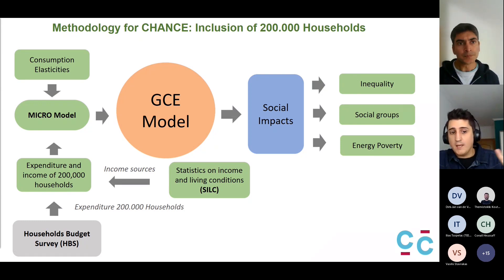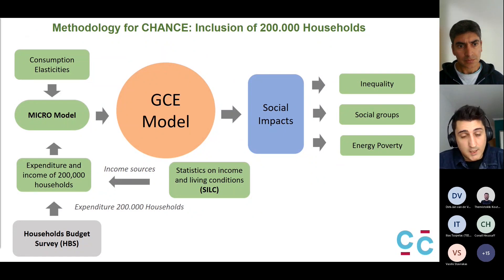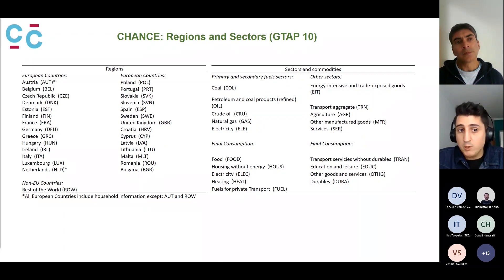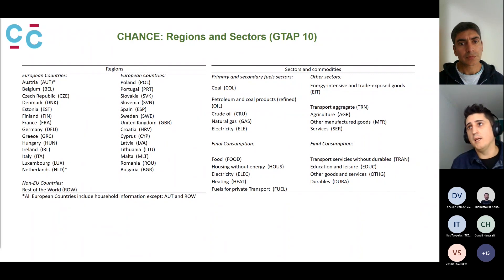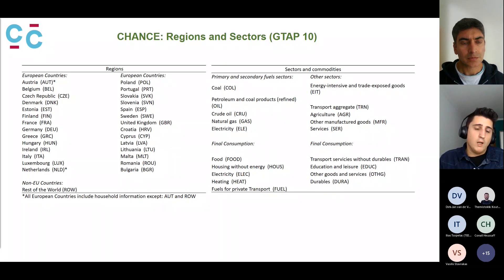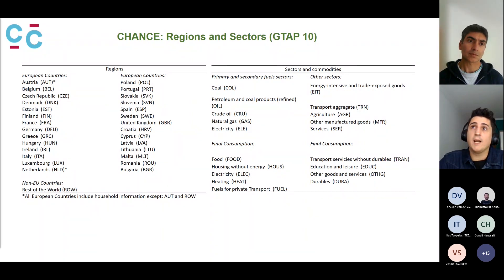The main data sources for the micro model are the Household Budget Survey and the EU-SILC. For the CGE, we construct it using the latest version of GTAP 10 — a world input-output table database whose latest data is from 2014. We are also open to working with additional input-output tables. This is the aggregation we have done for this project and model.